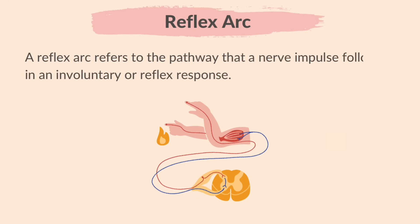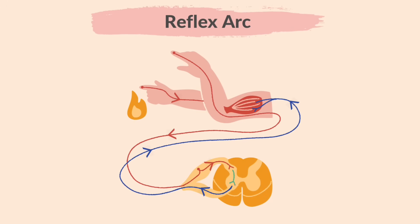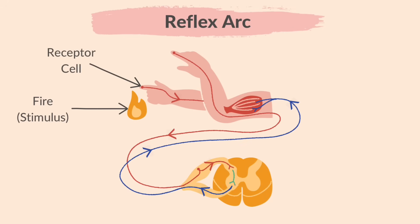An involuntary or reflex response is a fast and automatic reaction that doesn't involve the brain and it helps protect the body from harm. A reflex arc refers to the pathway that a nerve impulse follows in an involuntary or reflex response. For example, if we accidentally touch fire: the stimulus is the fire, the receptor cells on the skin detect this stimulus, and the sensory neuron sends electrical impulses to the spinal cord — the coordinator.